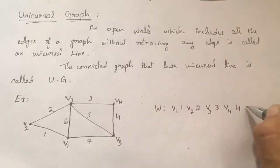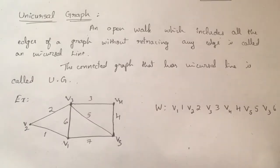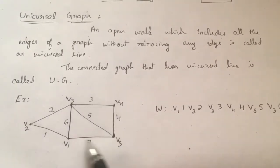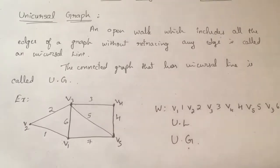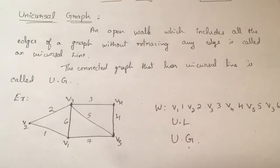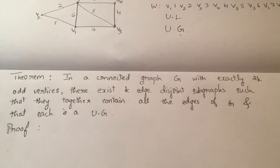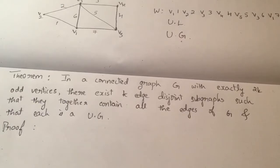V1, V2, V3, V4, V5, V3, V1, V4, V2, V5 — I am reaching V5. Of course it is not a closed walk, and this walk has got all the edges of the graph, therefore this is a Unicursal line and therefore the graph is a Unicursal graph. There is one theorem which states: in a connected graph G with exactly 2k odd vertices, there exist k edge-disjoint subgraphs such that they together contain all the edges of G and each is a Unicursal graph.